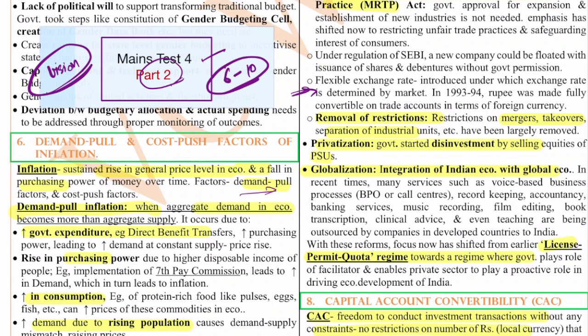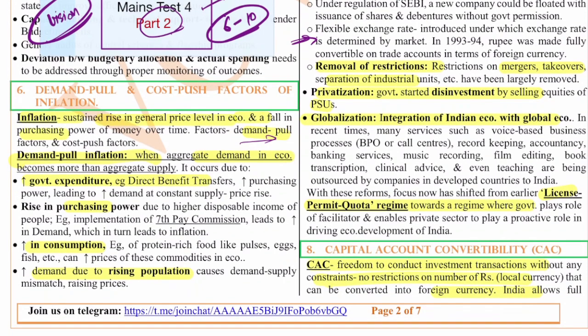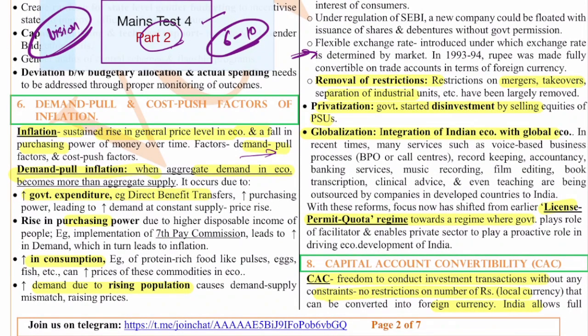Let's begin with the sixth question. This test covers economy static questions. Question 6 is about inflation — recently because of the Russia-Ukraine war, inflation was in the news. Every year we see a couple of static questions in the paper, so it's always better to have a grip on static content like how to write the answer and the introduction. If we can add some current affairs to these static questions, it gives us that edge. This question is directly on demand-pull inflation and cost-push inflation.